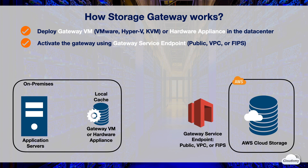There are three endpoint options: public endpoint, VPC endpoint, or FIPS endpoint. You can activate your gateway using a public endpoint and have your gateway communicate with AWS storage services over the public internet. Or you can activate your gateway using a VPC endpoint, which is private — all communication from your gateway to AWS services occurs through the VPC endpoint in your VPC on AWS.